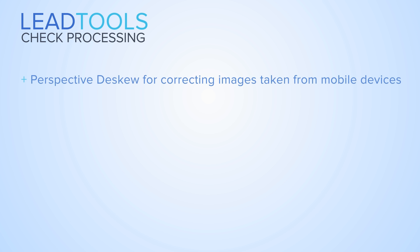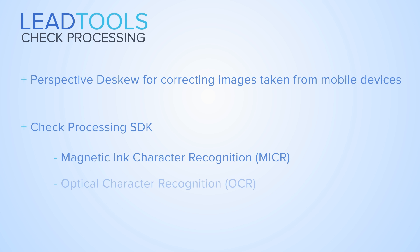First, we will introduce the Perspective DSQ image cleanup function designed for correcting three-dimensional distortion common in pictures captured by mobile devices. Then, we will use the Check Processing SDK which combines MICR and OCR to extract data from check fields such as the date, name, amount, signature, bank account, and routing number.